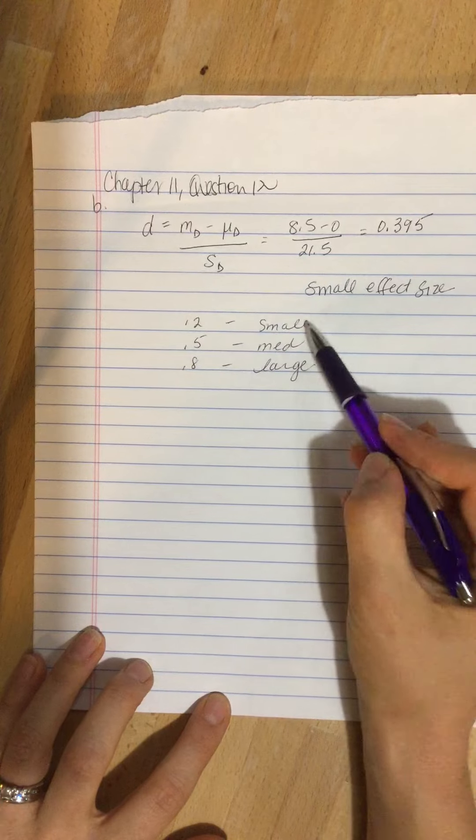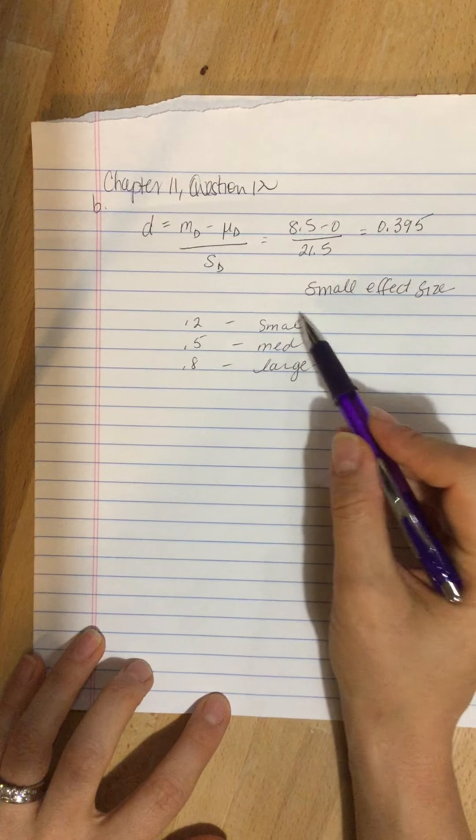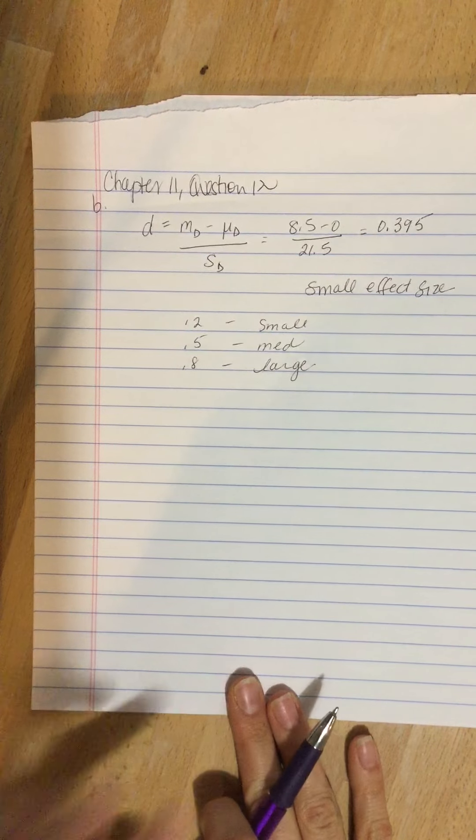So this effect size falls somewhere between small and medium, and so depending on your textbook, it'll either be small to medium, or you default to the lower value where it's a small effect size.